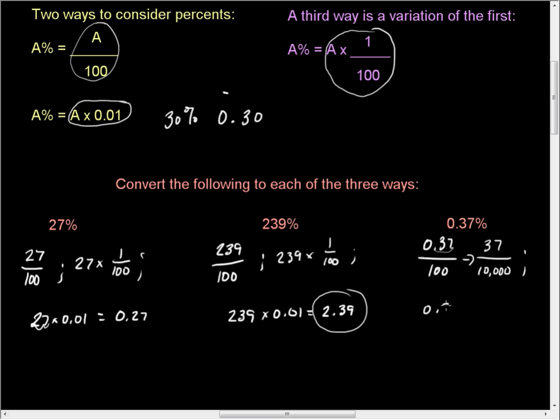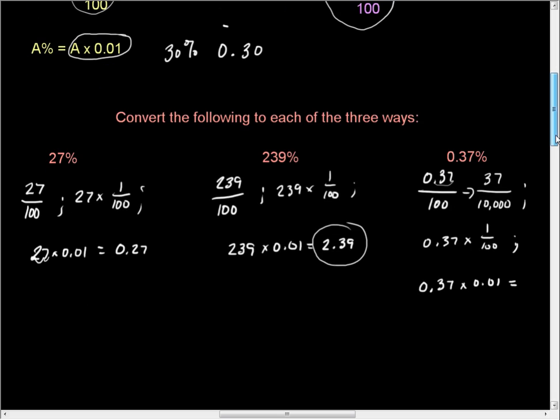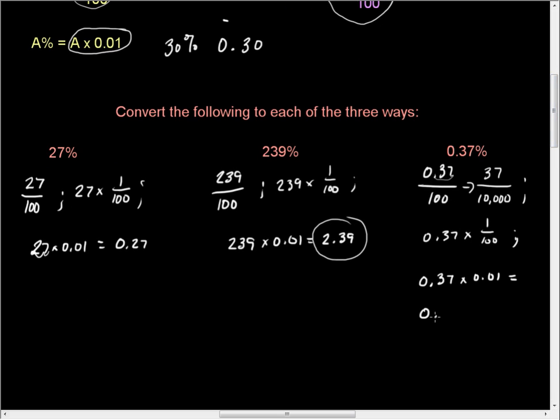But the other way to write it is 0.37 times 1 over 100. Again, you may have to simplify this. And the third way is a little bit tricky, but you still go through the same process: 0.37 times 0.01. The only difference is when you write this, notice it's less than 1%. 1% would have been right here. You would have had a 1. Well, this is a little less than 1. In fact, it's 0.37.